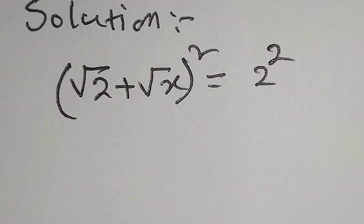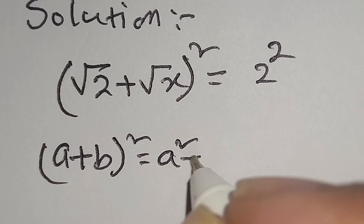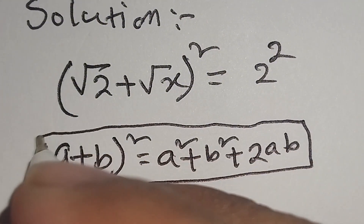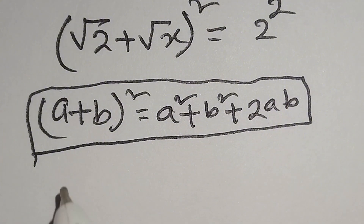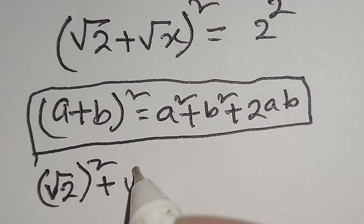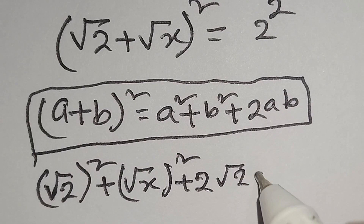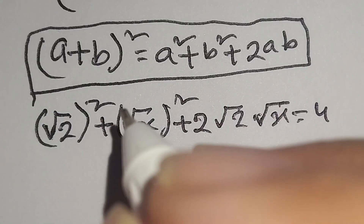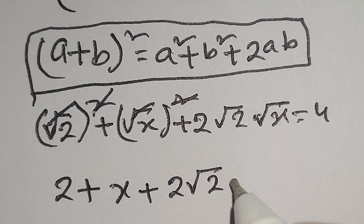We know that (a + b)² is equal to a² + b² + 2ab. According to this identity, we can write (2 + √x)² as (√2)² plus (√x)² plus 2 times √2 times √x. This equals 4, since (√2)² is 2, (√x)² is x, so we get 2 plus x plus 2√2·√x.